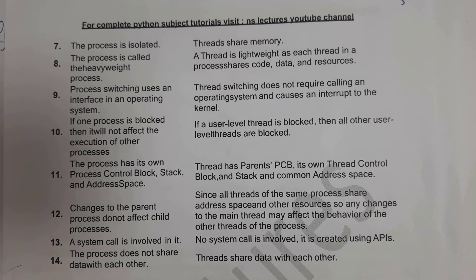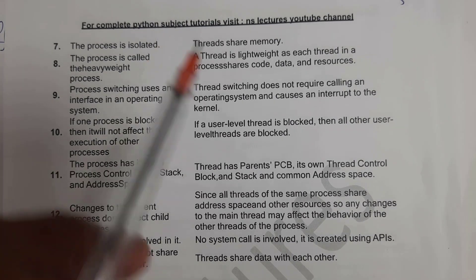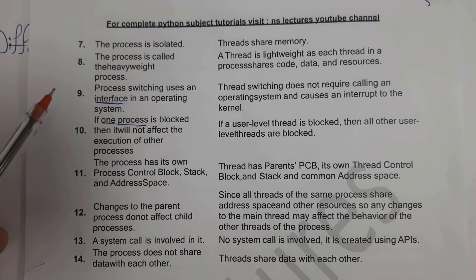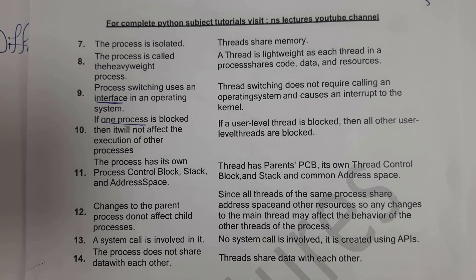The process is isolated — that means a process will not share memory, whereas threads share memory. A process is heavyweight, whereas a thread is lightweight. Process switching uses an interface in an operating system, whereas a thread does not use an interface in an operating system. If one process is blocked, it will not affect other processes, whereas if one thread is blocked, it will block all other threads.